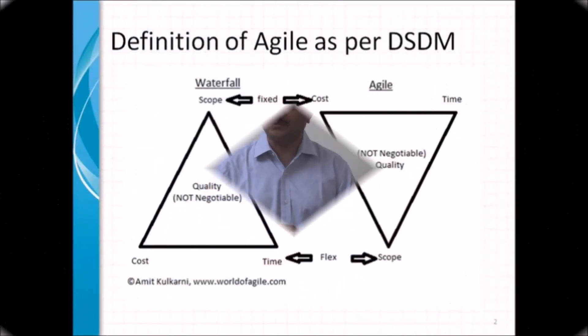There is another very good definition I want you to understand, which comes from a methodology called DSDM. This is another way of defining agile. In the traditional methodology, the scope is always fixed and the cost and time are adjusted to deliver the agreed scope.